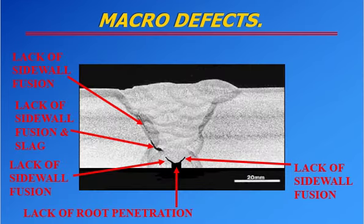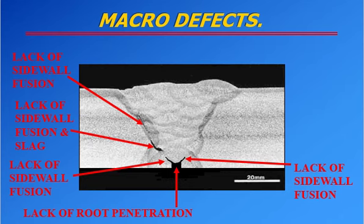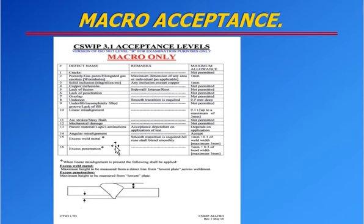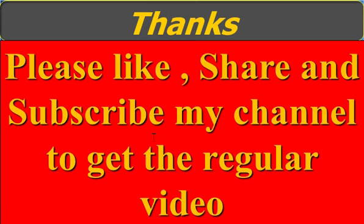To summarize, understand all these defects — most probably all these major defect types will appear in your exam. This acceptance level is what they will give to you. Thanks for watching the video. I will also upload a radiograph video next. I hope this video helped you understand the acceptance levels and what weld defects look like in macro section. Please like, share, and subscribe to my channel for regular videos. Thank you.